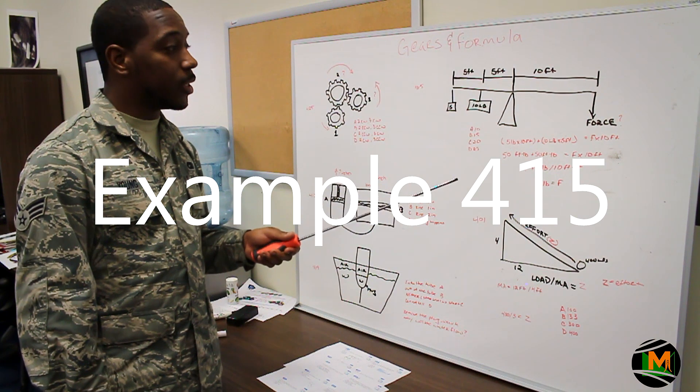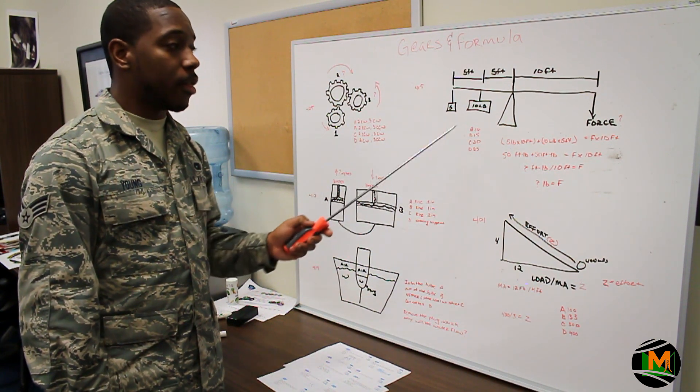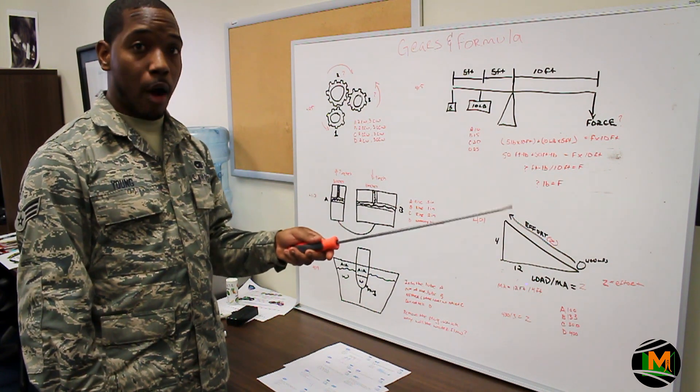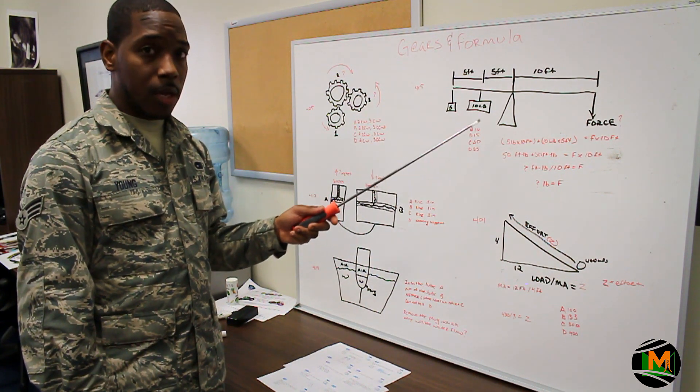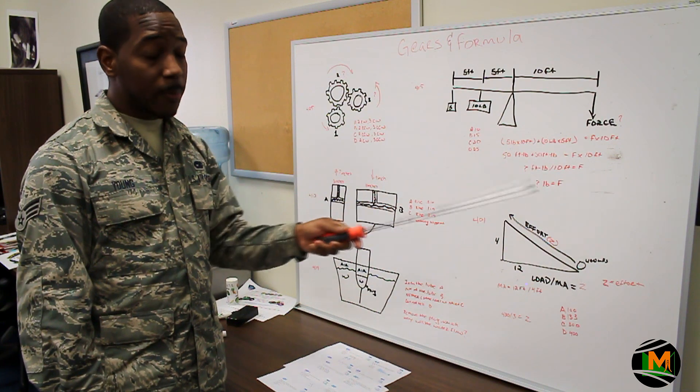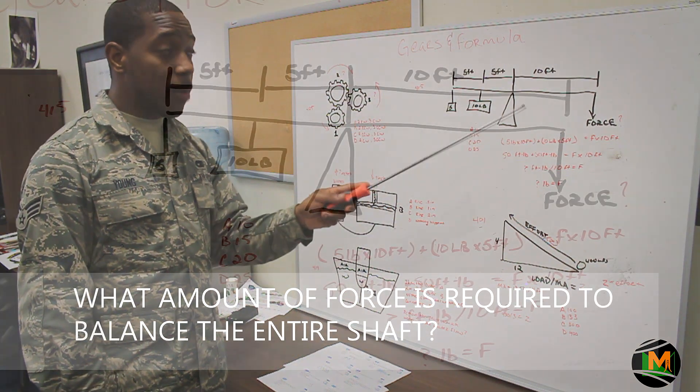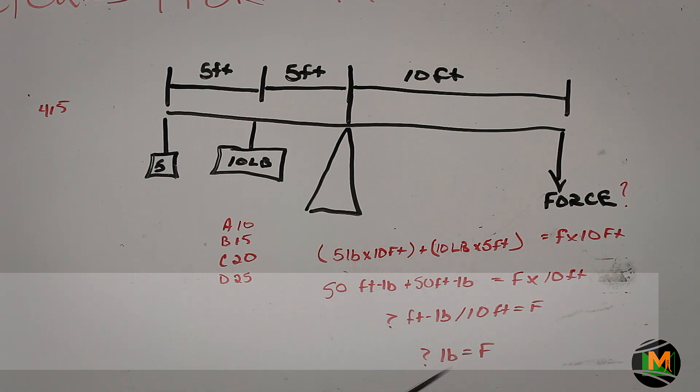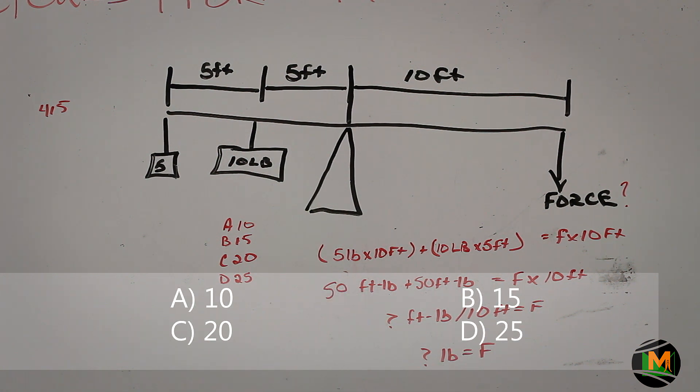Example number 415 gives you a little bit more in depth on the math portion of the ASVAB. This will basically show you how to solve a problem when there are multiple numbers and an answer that needs to be solved at the end. The question states: what amount of force is required to balance this entire shaft? Down here below, you'll see the formula written, but I'll go through it step by step.